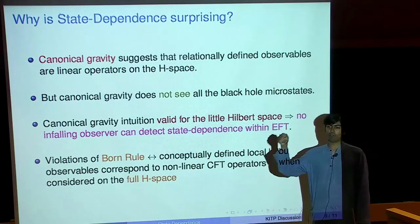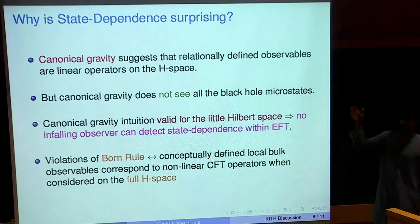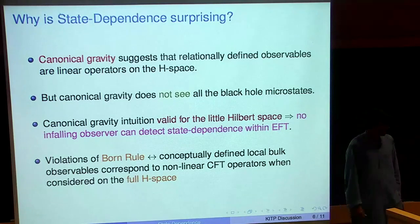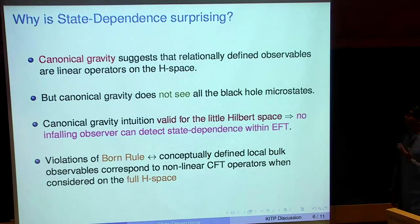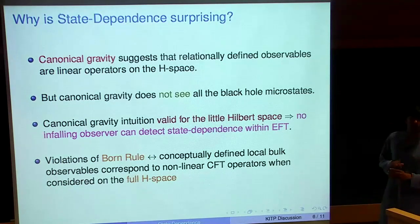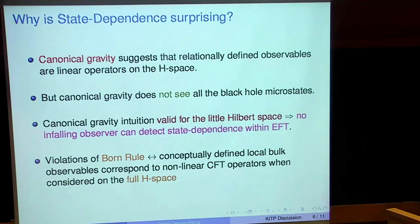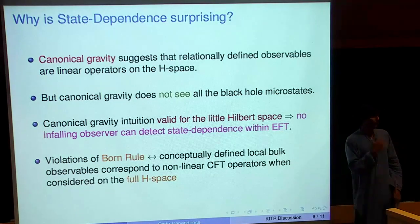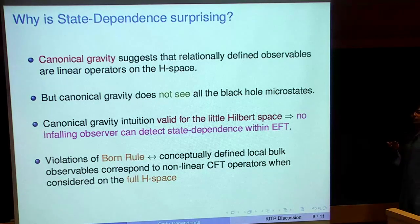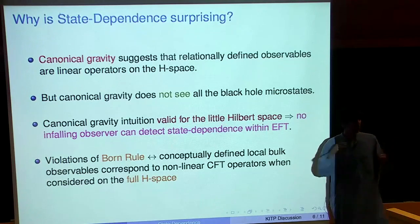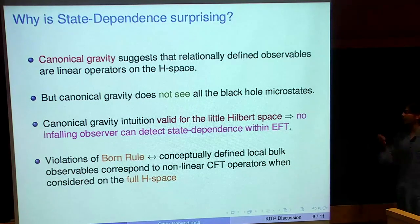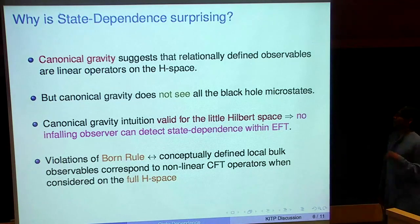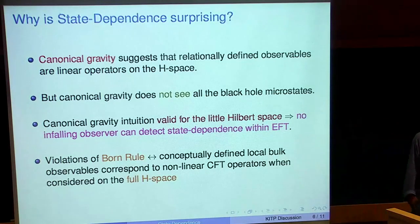You might suspect the canonical gravity intuition, because canonical gravity doesn't see all the black hole microstates. So in taking canonical gravity past its regime of validity, there is no frame where it sees all the microstates. The canonical gravity intuition is valid within the little Hilbert space — what you see if you quantize fields about the background of a black hole. By construction, these observables behave like ordinary linear observables within the little Hilbert space. The corollary is that no infalling observer can detect state dependence by doing experiments within effective field theory.